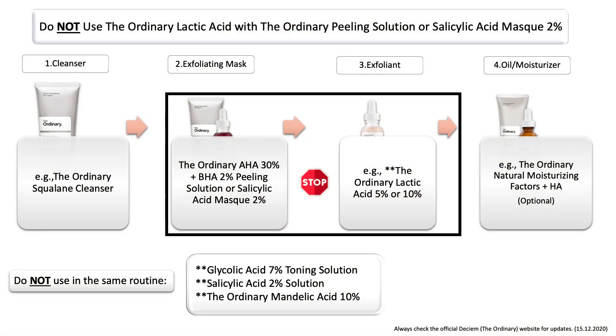Another example: do not use The Ordinary lactic acid 5% or 10% with The Ordinary peeling solution or salicylic acid mask. The peeling solution includes 30% AHA, mostly glycolic acid plus a little lactic acid, and 2% BHA salicylic acid. The 2% salicylic acid mask also includes 2% salicylic acid. When using your peeling solution once or twice per week, do not use lactic acid afterwards, as this can cause severe skin irritation. You have already exfoliated your skin with the mask, so there's no need to exfoliate again. Keep it simple—just add hydration afterwards.